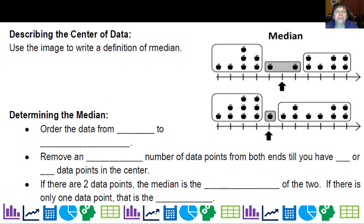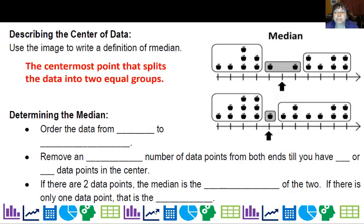We have two measures that we can use to describe the center of data. The first one is the median. It's the centermost point that splits the data into two equal groups when you put the data in order. You order the data from least to greatest, remove an equal number of points from both ends until you have one or two data points in the center. If you have one data point in the center that's your median. If you have two data points, then it is the average of the two data points.